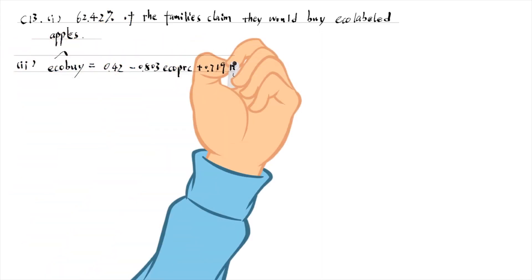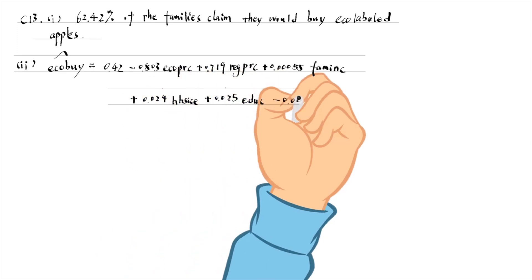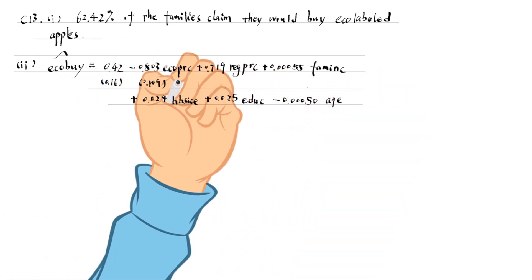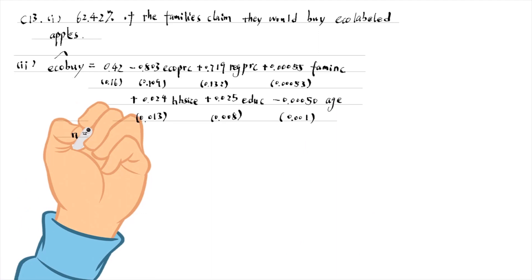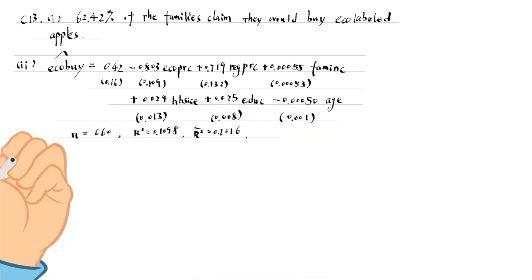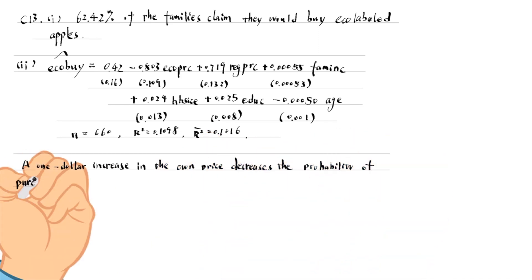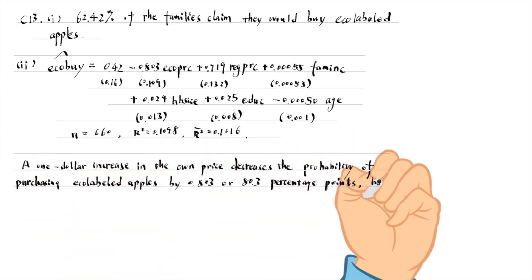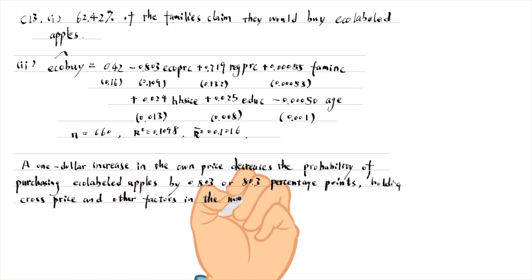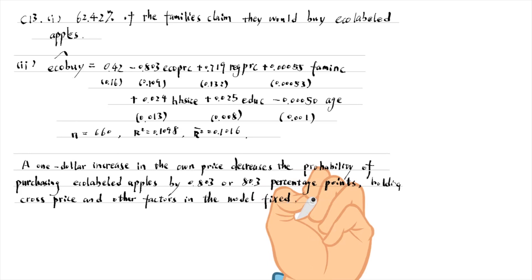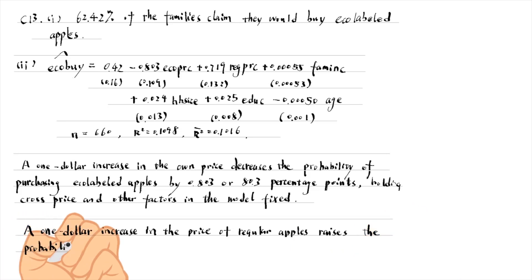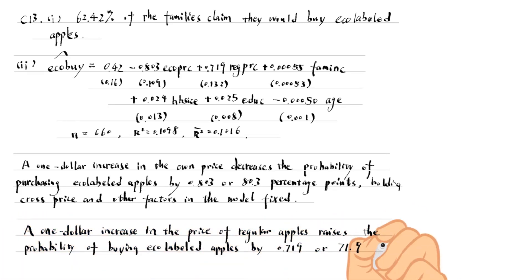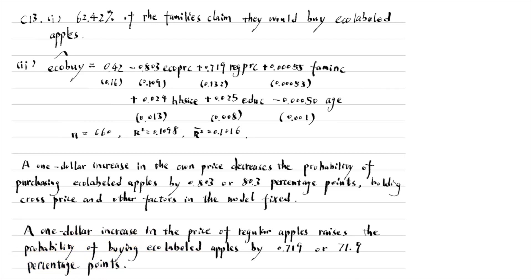For part 2, the estimated equation is as follows. A $1 increase in the own price decreases the probability of purchasing equal-labeled apples by 0.803 or 80.3 percentage points, holding cross-price and other factors in the model fixed. A $1 increase in the price of regular apples raises the probability of buying equal-labeled apples by 0.719 or 71.9 percentage points.